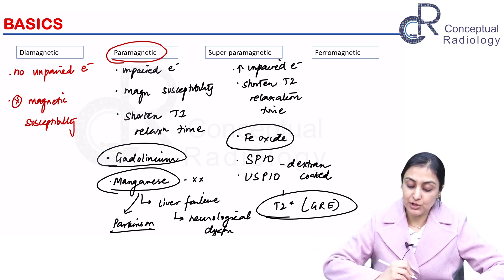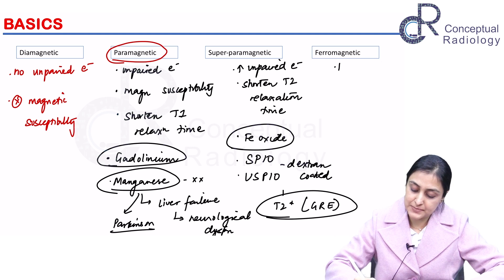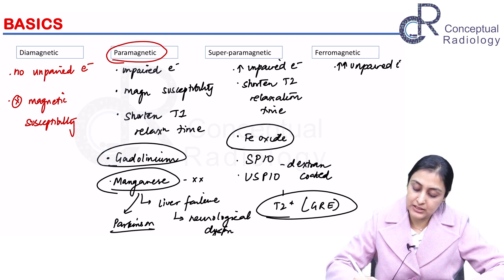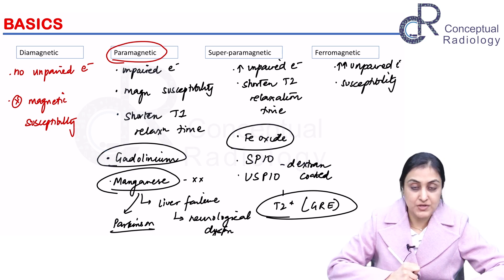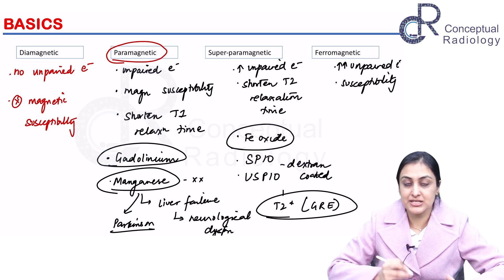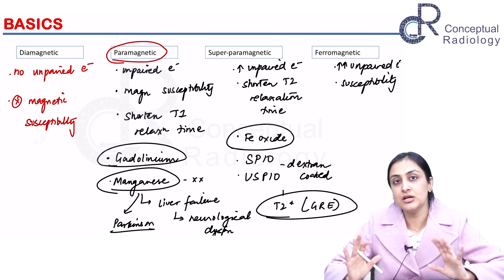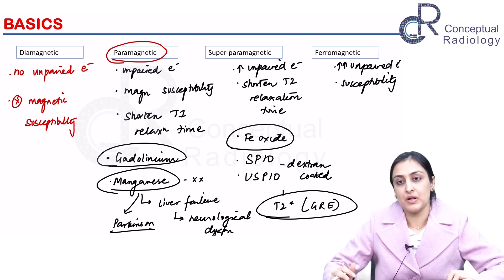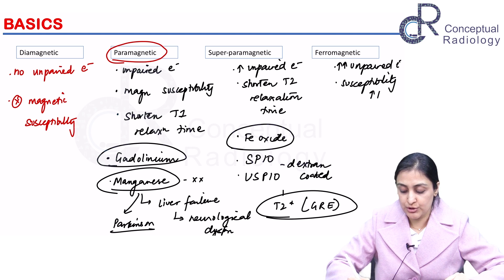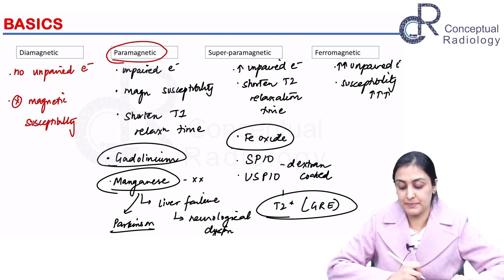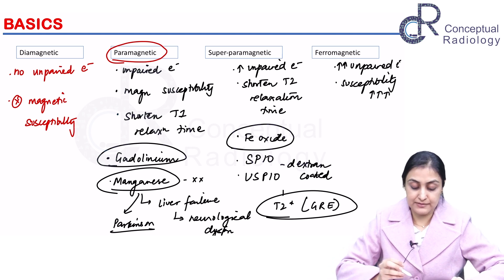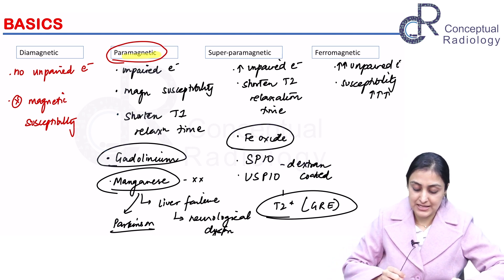Ferromagnetic substances have a large number of unpaired electrons and cause susceptibility artifacts in all sequences — even without an RF pulse. So these cause a lot of susceptibility. This is how we classify the substances, and what is most important for MR contrast purposes is gadolinium and iron oxide.